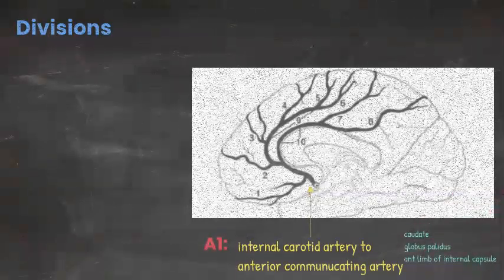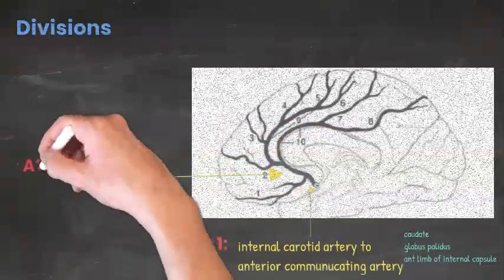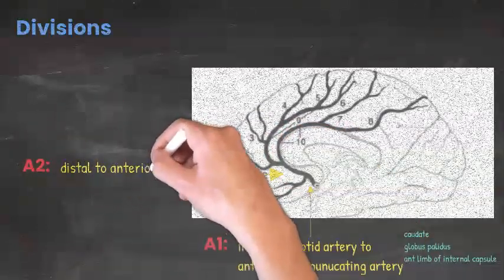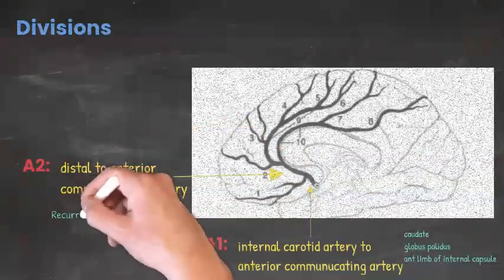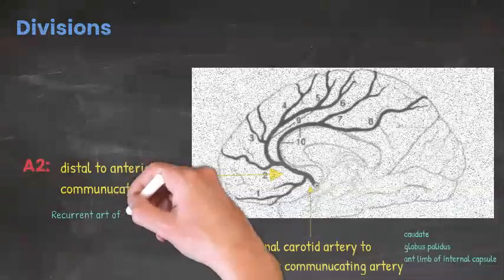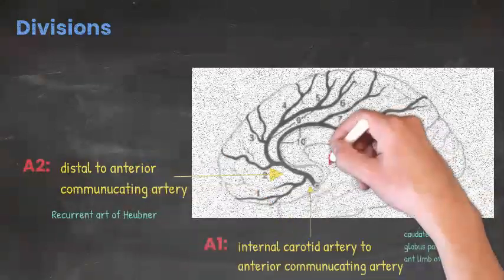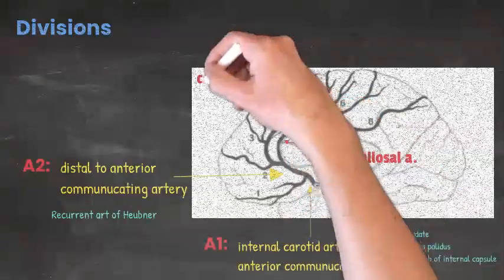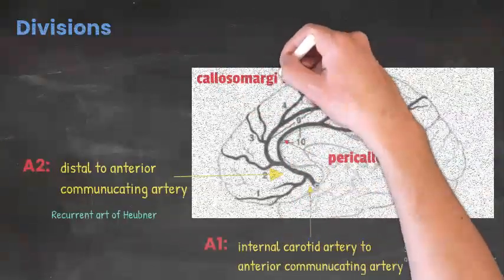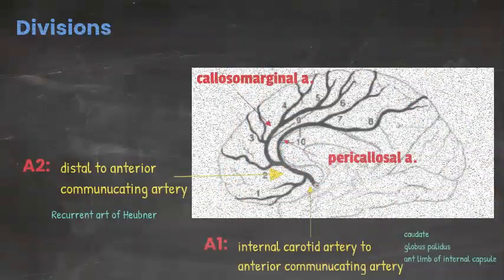The A2 segment extends distal to the artery of Huebner. Then the anterior cerebral artery gives two major branches: the pericallosal and callosomarginal arteries.